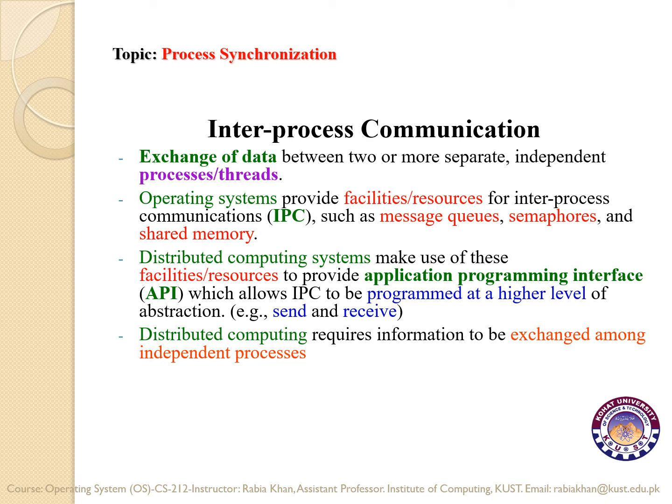One process on one machine sends a request to another process on another machine, which after receiving your request responds back. Commonly, Google works in this fashion. Your browser is a process on your machine that sends a request to Google, which is another process running on another machine. Google receives your request, processes it, and responds back in your browser.